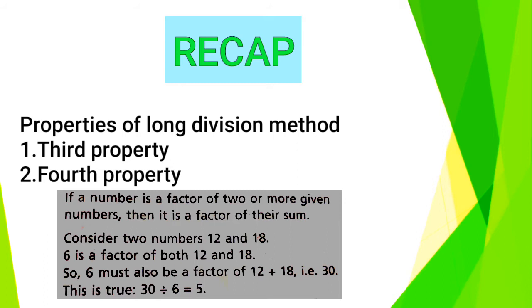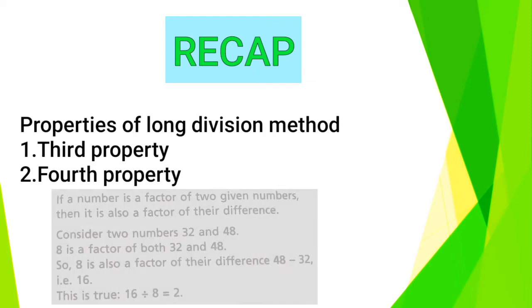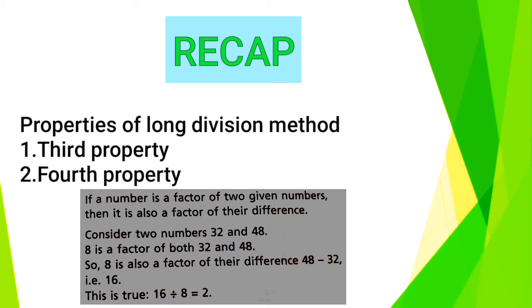Example is given below. Number 2, Fourth property. Fourth property is that if a number is a factor of two given numbers, then it is also a factor of their difference. You can understand by the given example. Now today's topic is division method.